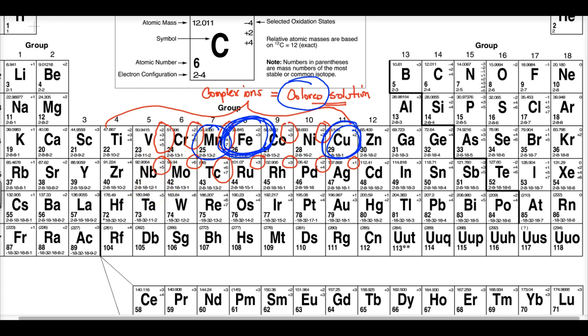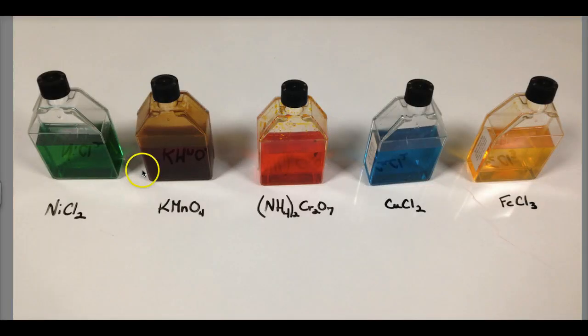Look at these colored solutions. What makes nickel chloride have color? The nickel—a transitional element. KMnO4: K is an alkali metal, but the manganese makes it purple. Chromium gives this orange-red color. Copper is bluish-green. Iron chloride dissolved in water gives these colors.